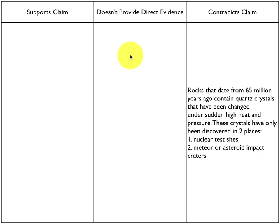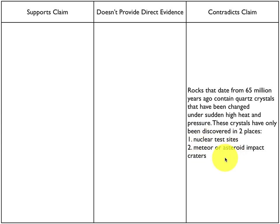When you come back, I have a lot of students that put this card here — that rocks dating from 65 million years ago contain quartz crystals changed under sudden high heat and pressure. These have only been discovered in two places on Earth: nuclear test sites or meteor/asteroid impacts. Students say that contradicts the claim that volcanoes caused the extinction of the dinosaurs. This gives me a chance to really talk about what it means to contradict a claim. In science, it's really hard to prove things correct, but we can gather evidence that really disproves things. When we say something contradicts a claim, that means we have evidence that it simply could not happen.